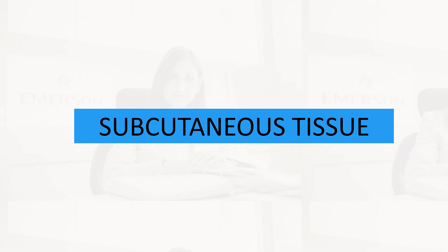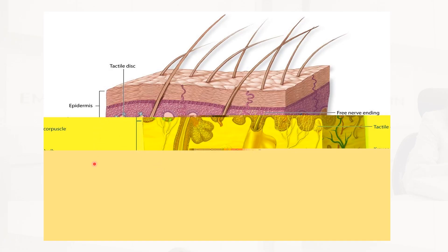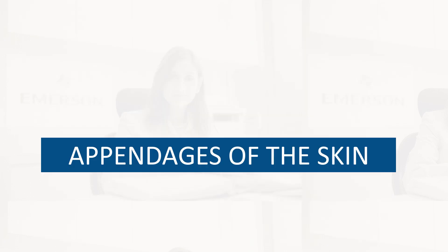The subcutaneous tissue, also known as the hypodermis or superficial fascia, consists of loose connective tissue that binds the skin loosely to subjacent organs, making it possible for the skin to slide over them. It contains adipocytes, and the extensive vascularity makes it possible for drug absorption when medications are given subcutaneously.